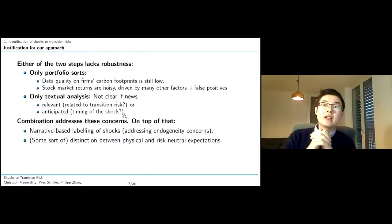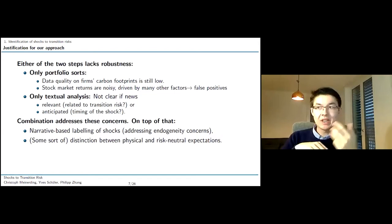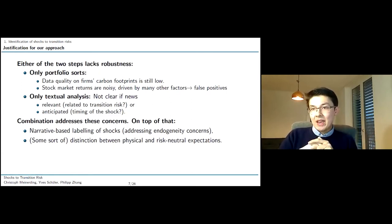We believe that the combination of those two approaches addresses these concerns. On top of that, this dual approach allows some narrative-based labeling of shocks, also addressing the endogeneity concerns. The shocks are mainly policy events, policy decisions. These come from outside the economy, these are in a sense exogenous. And in some way, but this is preliminary, one could interpret this as some kind of distinction between changes to physical and risk-neutral expectations. Portfolio shocks represent changes to risk-neutral expectations while news shocks are reflecting more changes in physical expectations. But as I said, that's a bit preliminary and we appreciate any input or thoughts you'd have on that.